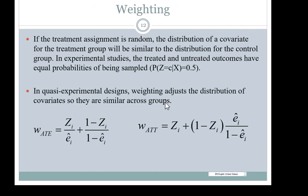In a treatment with random assignment, the probability of treatment assignment is 0.5 for all individuals, so you don't need to weight. In a quasi-experimental design, the weight adjusts the distribution of covariates so they are similar across groups. There are multiple definitions of weights. The most common, for estimating the average treatment effect, uses the formula where Z is the treatment assignment indicator and e-hat-i is the propensity score: for the treated, the weight is 1 over the propensity score; for the control group, the weight is 1 over 1 minus the propensity score. This is known as inverse probability of treatment weighting (IPTW).